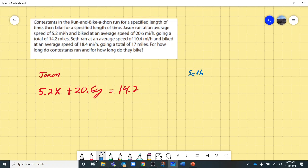Seth ran 10.4 miles per hour and biked 18.4 miles per hour. And he went a total of 17 miles.